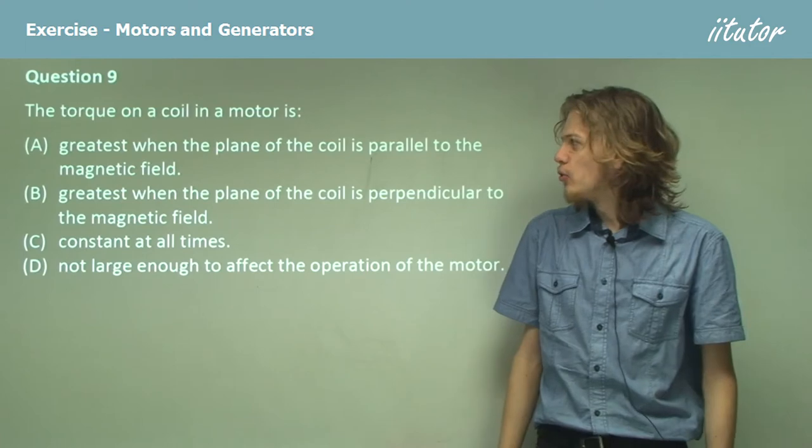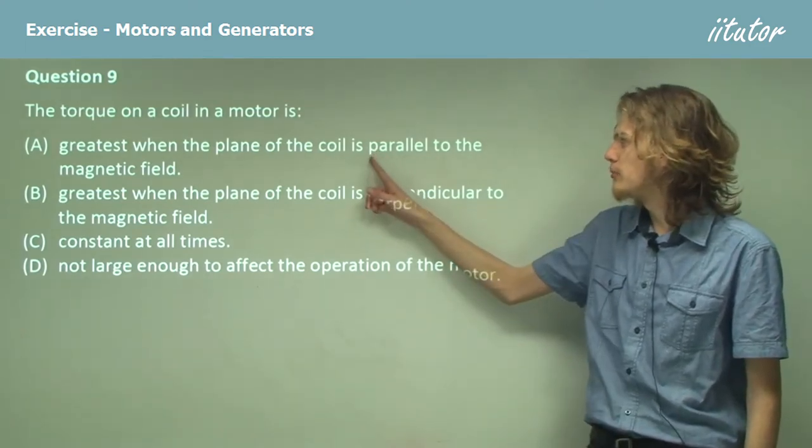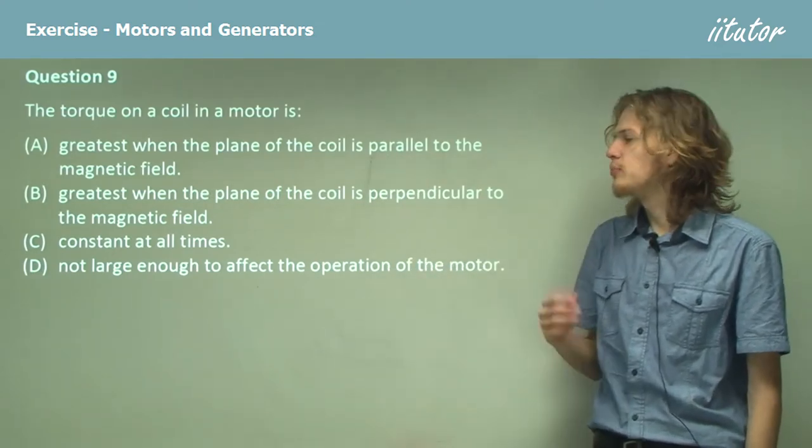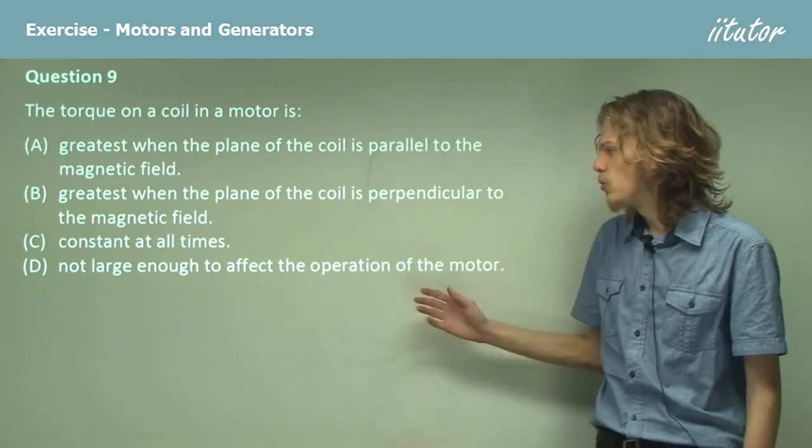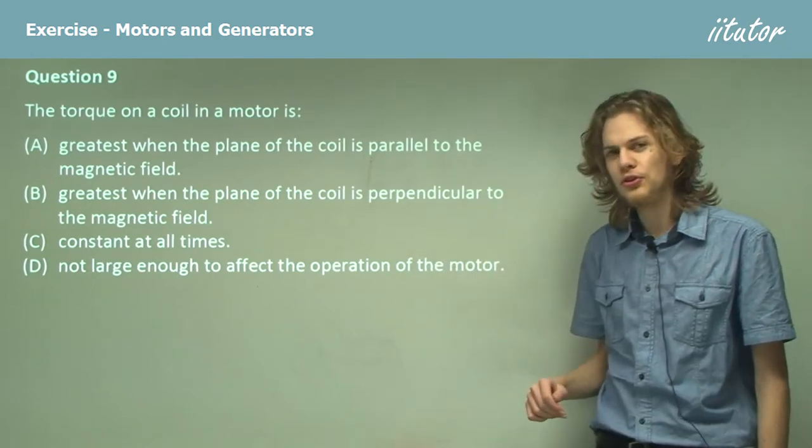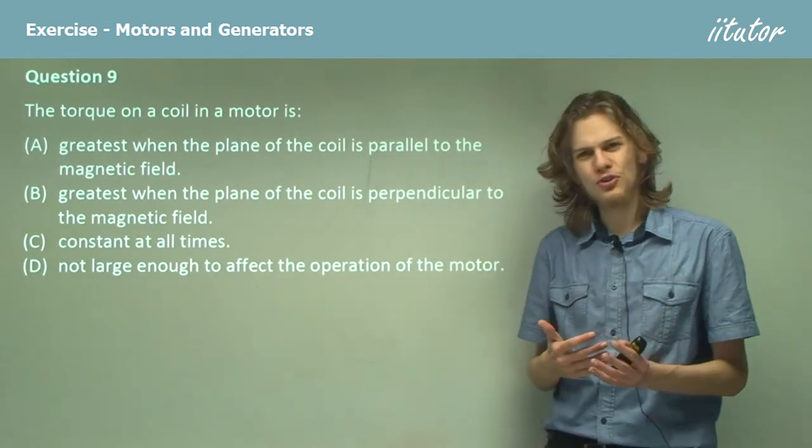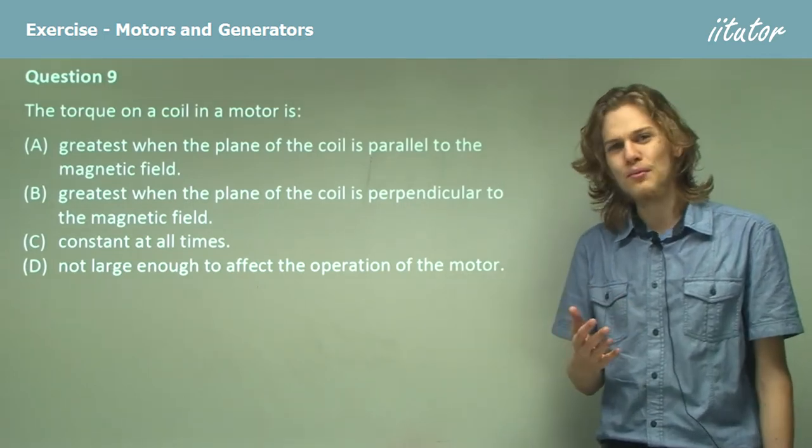Question 9. The torque on a coil in a motor is either greatest when the plane of the coil is parallel to the magnetic field, greatest when perpendicular to the magnetic field, constant at all times, or not large enough to affect the motor's operation. Right away we can see that D is wrong because torque is what causes the motor to turn. If the torque didn't affect the motor, it wouldn't be a motor.